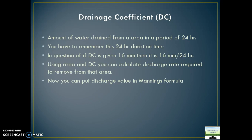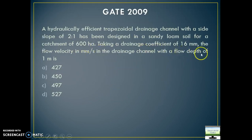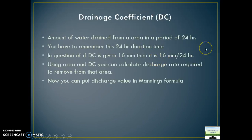So if drainage coefficient is 50 mm, then it is implicit that it is 50 mm divided by 24 hours. From here you can calculate the drainage rate — rate of drainage in mm per second or mm per hour — and when you multiply this quantity by area, you will know the entire discharge rate. That discharge rate you can use to calculate the flow velocity in your particular channel. So drainage coefficient is used to calculate what total quantity of water is going through your area per second or per hour. Please go through this slide.